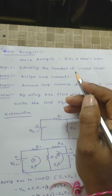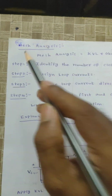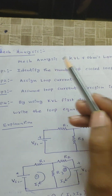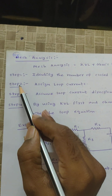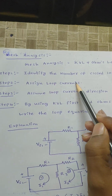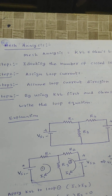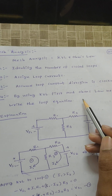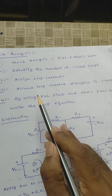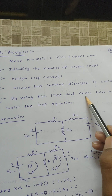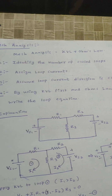Good evening. Now we will discuss mesh analysis. Step one: identify the number of closed loops or number of meshes. Step two: assign loop currents. Step three: assume loop current direction is always clockwise. Step four: using KVL and Ohm's law, write the loop equations.